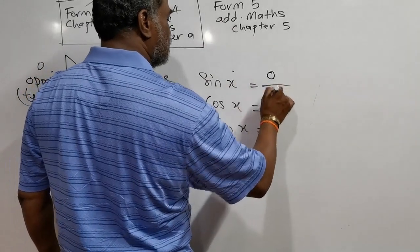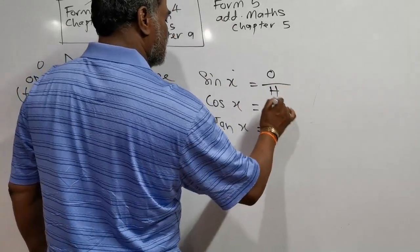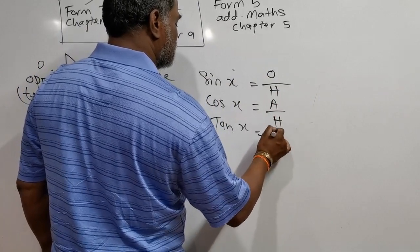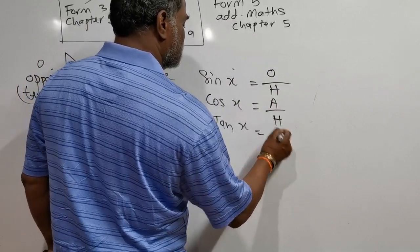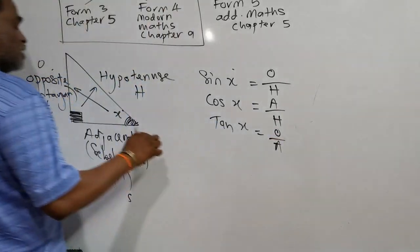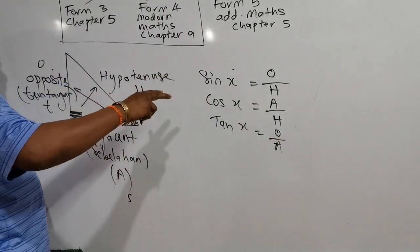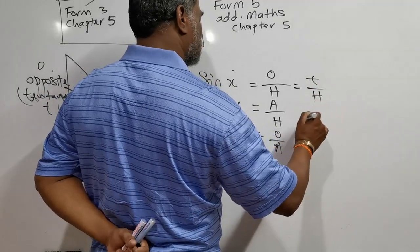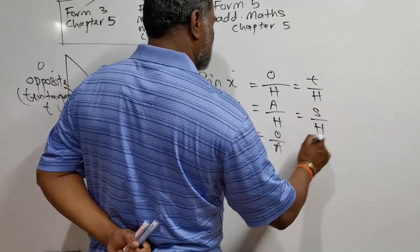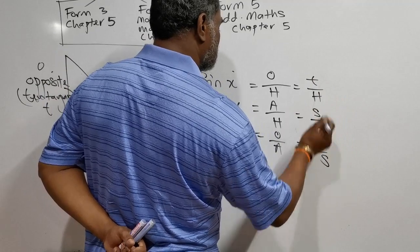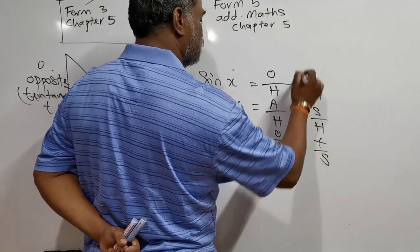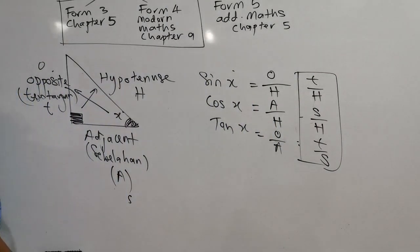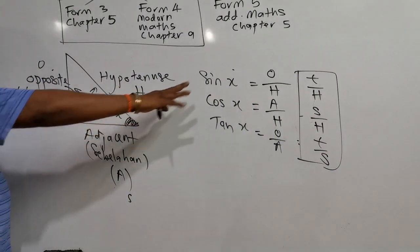In English: sin is opposite over hypotenuse. Cos is adjacent over hypotenuse. Tangent is opposite over adjacent. In Bahasa Melayu: sin adalah tentangan dibahagi hypotenuse, cos adalah sebelahan bagi hypotenuse, dan tangent adalah tentangan bagi sebelahan. This formula is fixed.